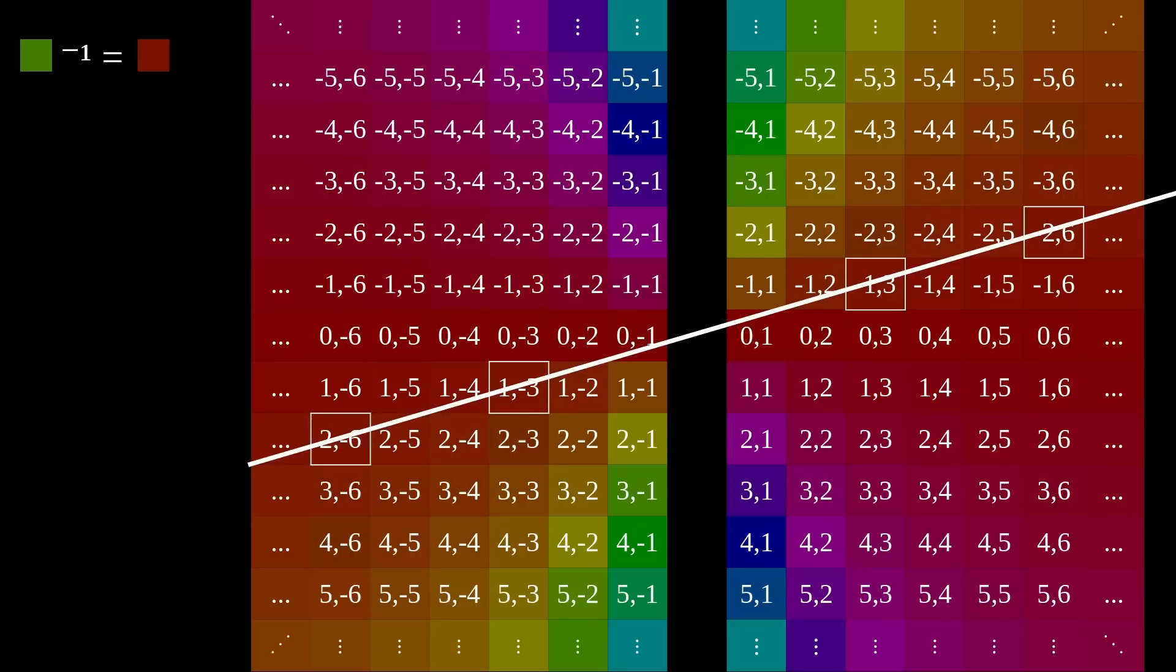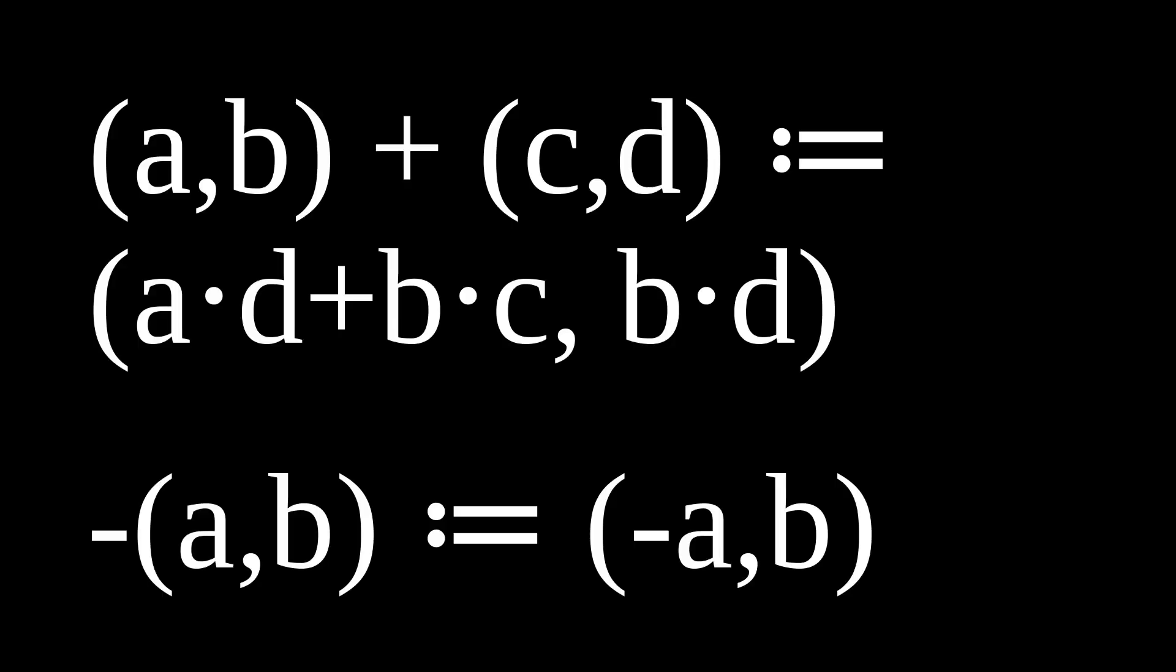For example, the reciprocal of the equivalence class containing negative 3,1 is the one containing 1, negative 3. And if you multiply them together, you get this one, containing 1,1. Also, here's addition and negation—that one's rather straightforward. Addition may seem a little strange, but it really is just what implicitly happens whenever you add fractions.